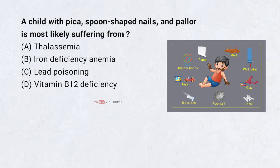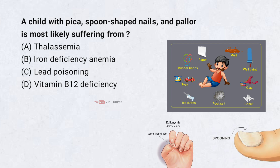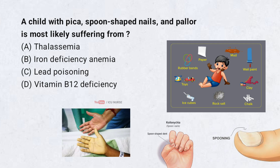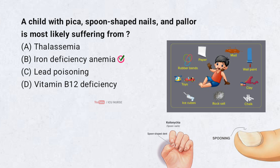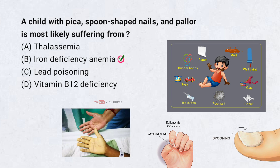A child with pica, spoon-shaped nails, and pallor is most likely suffering from: A. Thalassemia. B. Iron deficiency anemia. C. Lead poisoning. D. Vitamin B12 deficiency. Correct answer: B. Iron deficiency anemia. The classic triad — pica, koilonychia, and pallor — strongly suggests iron deficiency anemia.